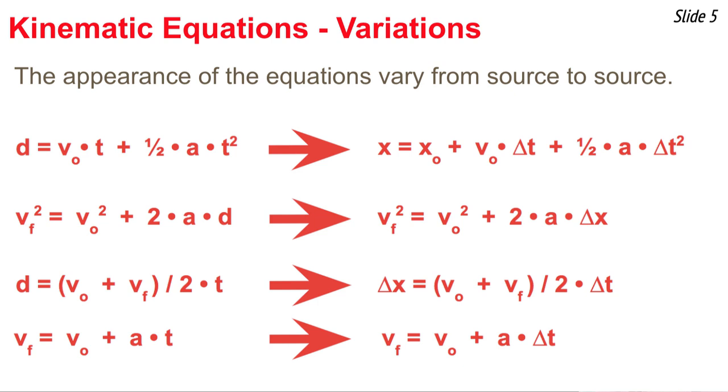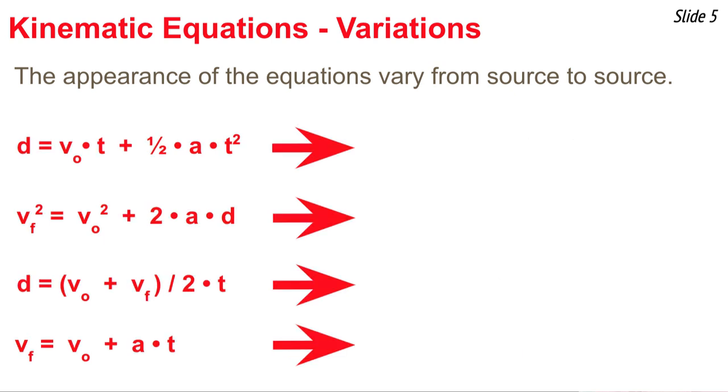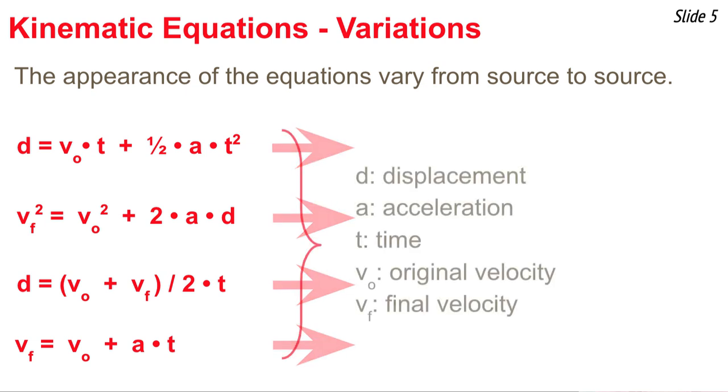It still means the same thing, the time over which the motion took place. And then you might notice that the v original that I have, the v subscripted o, may be replaced with a v subscripted i. They mean the same thing. The i just means initial velocity as opposed to the original velocity. Just a different way of putting it. So these four equations may not always look like the way that I've placed them here, but the main thing that you need to understand is whatever form of the equation you use, what do the symbols mean? So here they are again for my four equations.